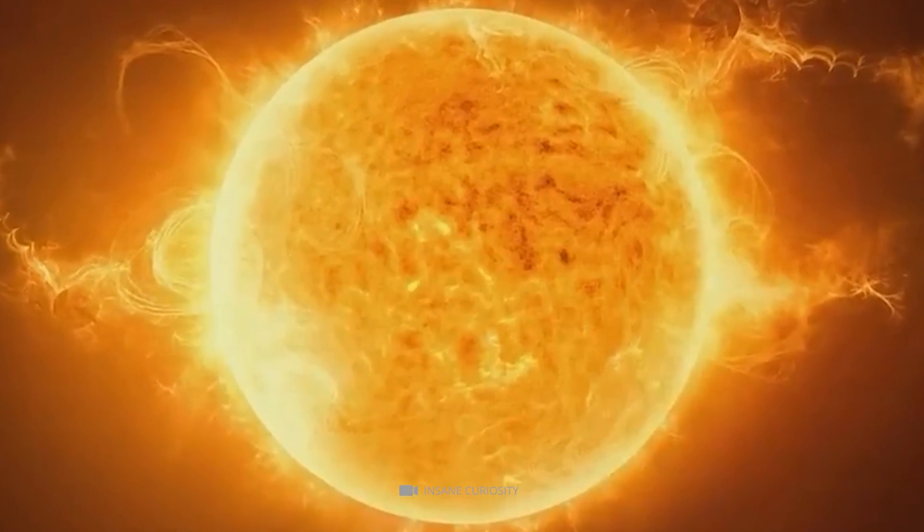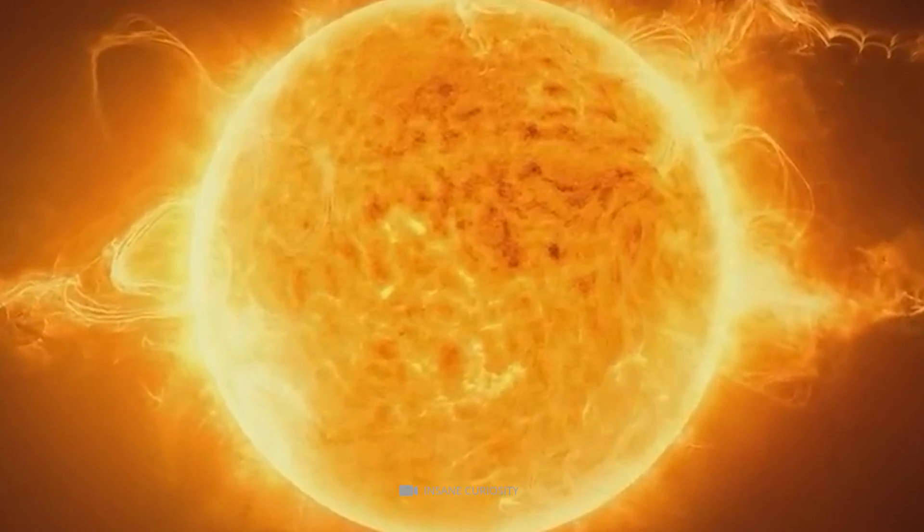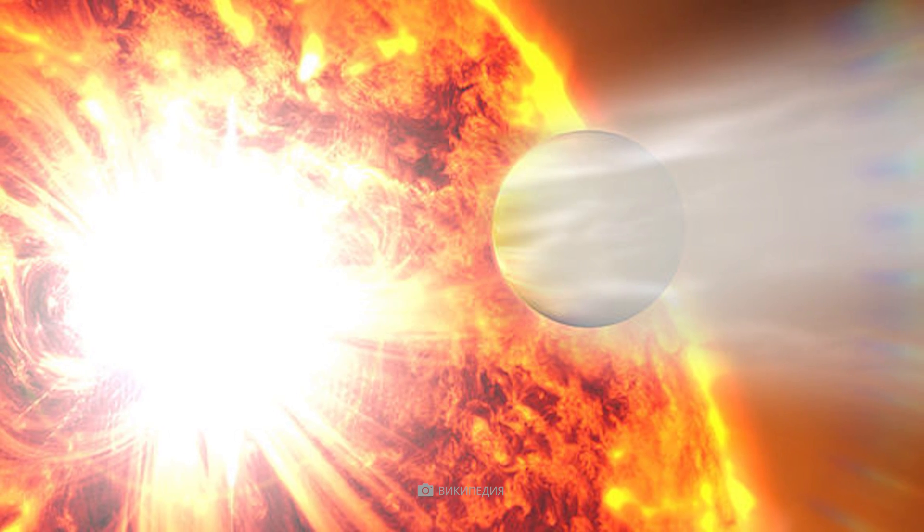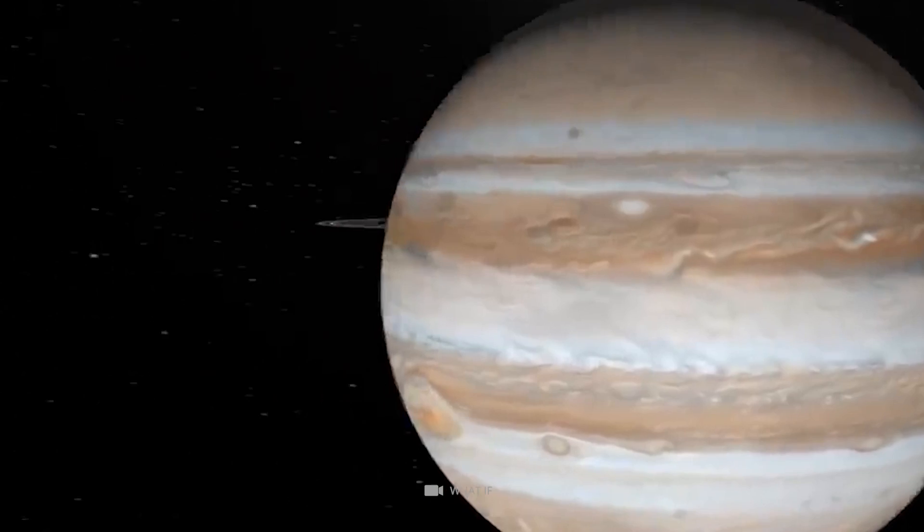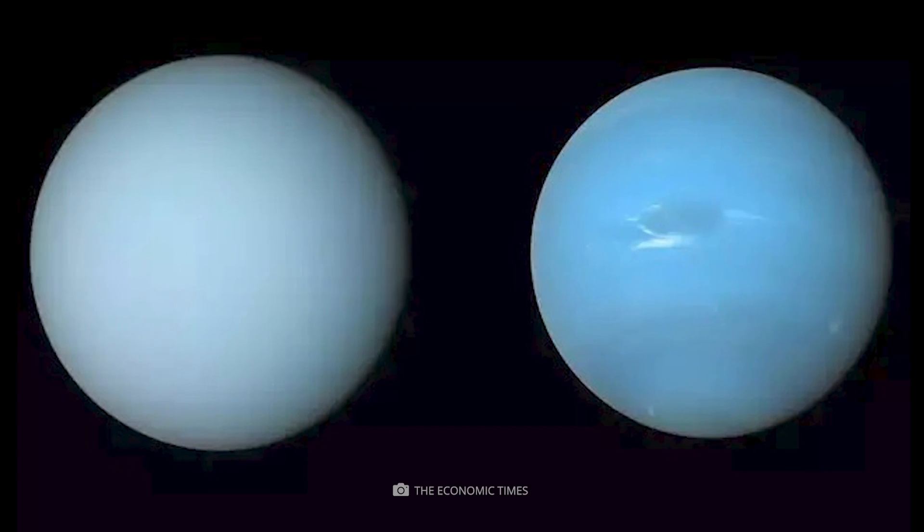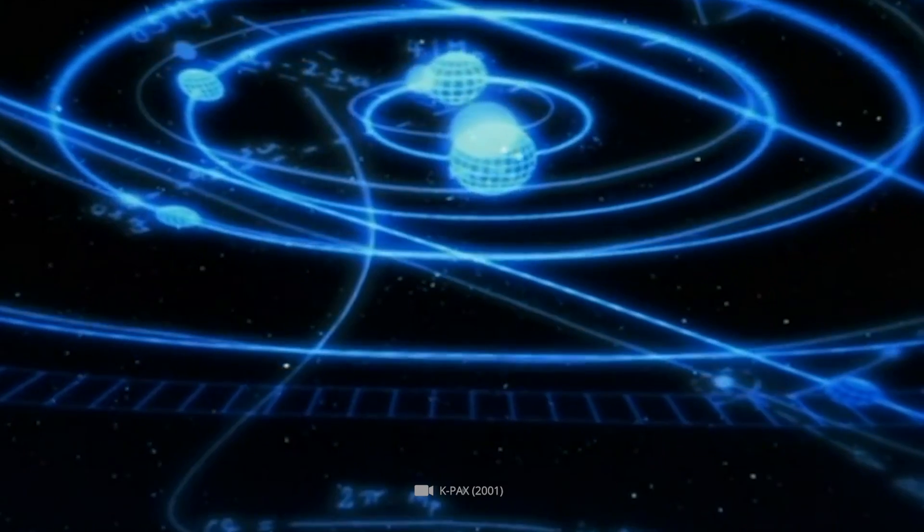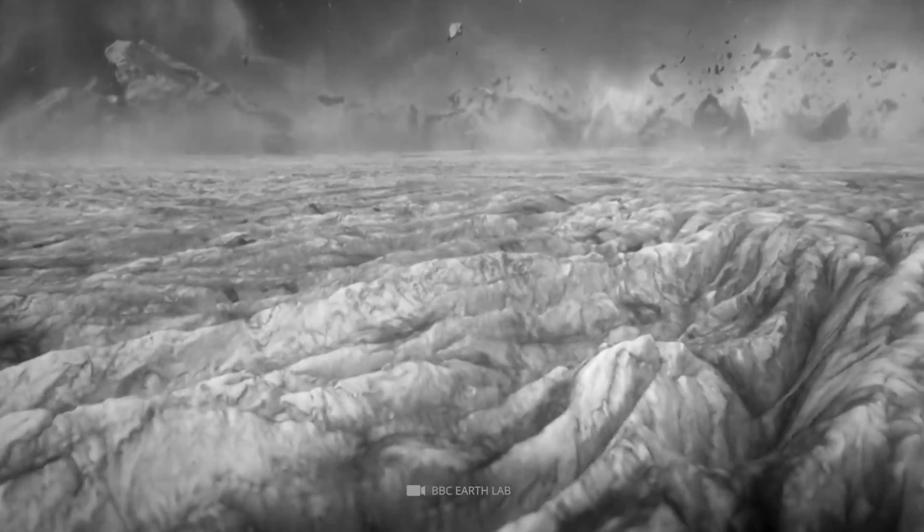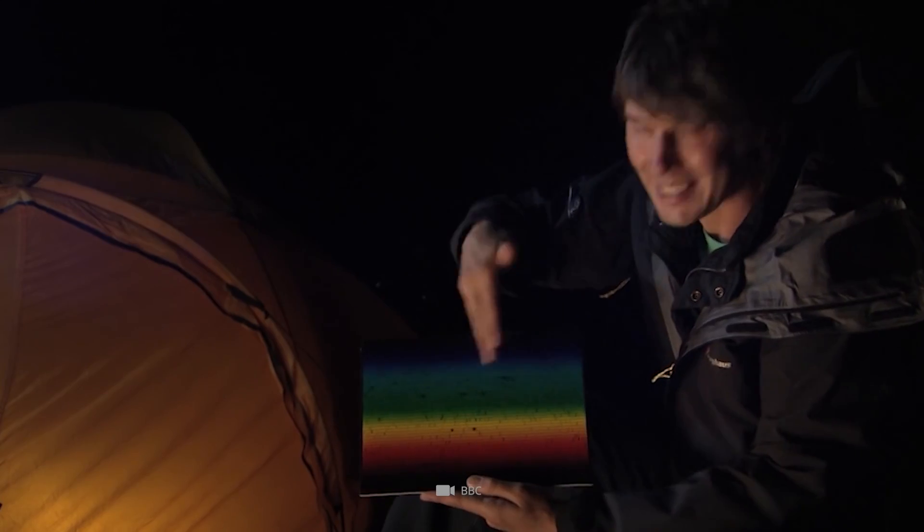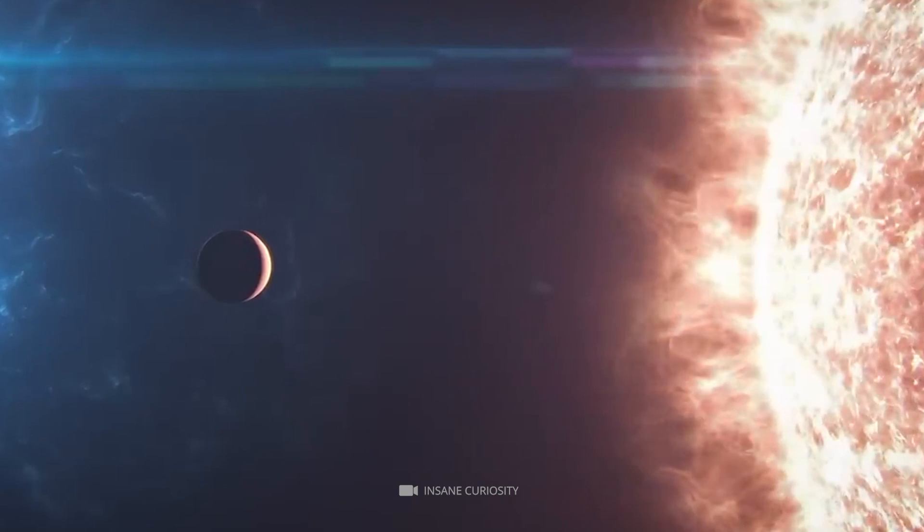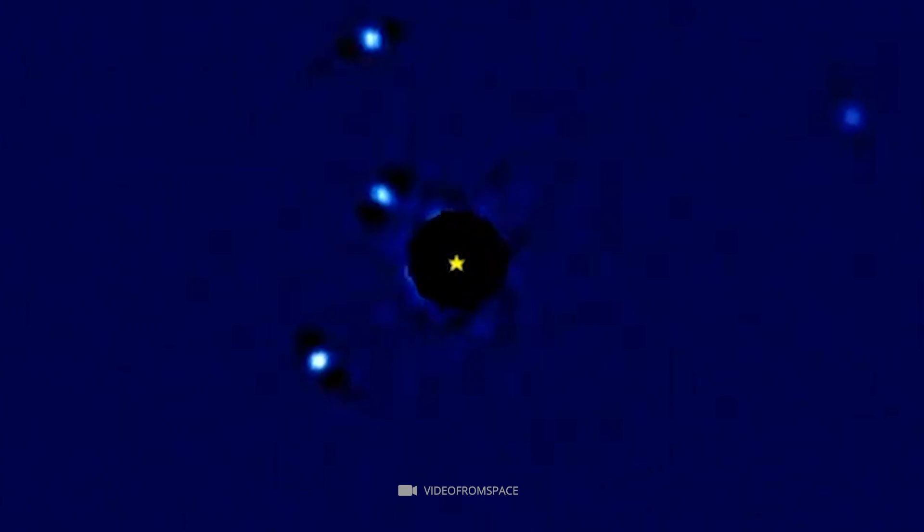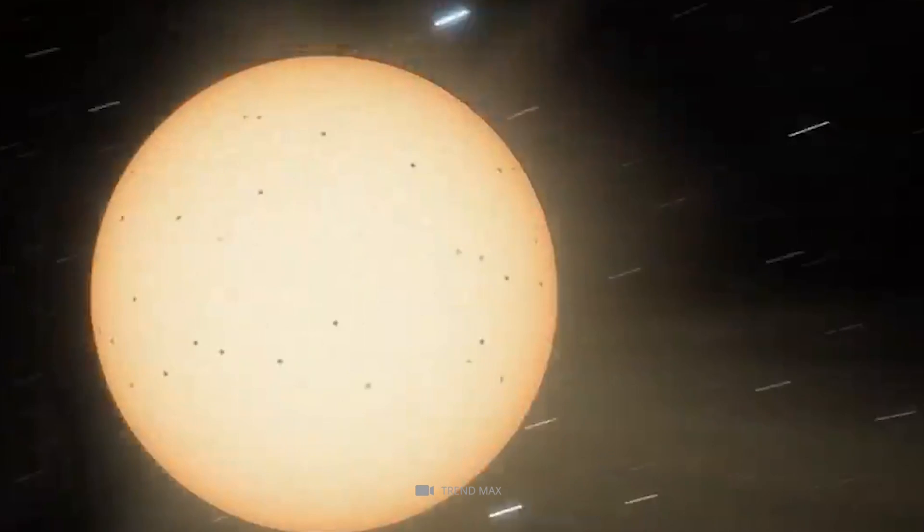This extreme temperature leaves the planet unable to sustain life as we know it, making it uninhabitable for humans or any other organism capable of living on Earth-like planets. Its size and density are similar to those found on Jupiter and Saturn, but not Neptune or Uranus. Observations suggest that powerful winds circle the planet at high altitudes, and recent studies have suggested that strong magnetic fields could be present due to their proximity to their host stars.